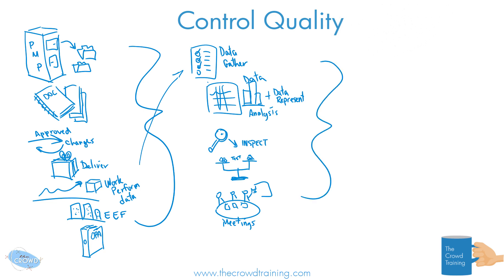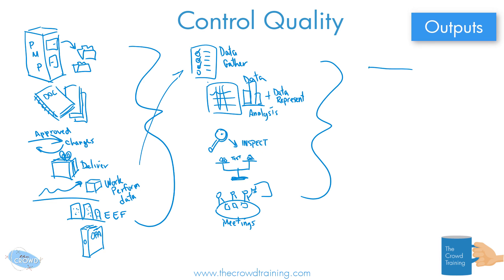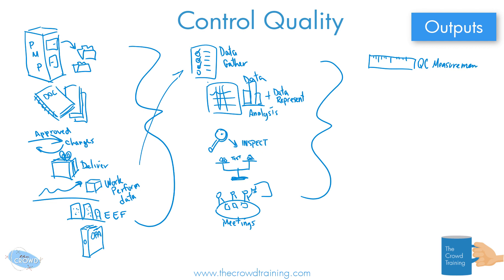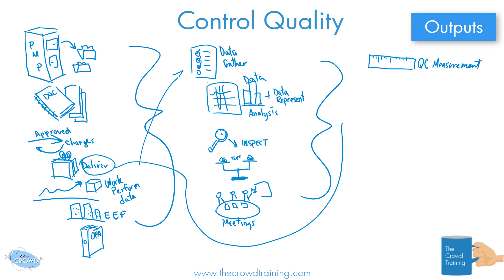So what do we get out of controlling our quality? Those are the outputs. One, we should have these measurements — as we're collecting them, we should have something to show. So I'll draw a quick ruler here to represent the quality control measurements that we have gathered, collected, and done. Also, the work that we have delivered — not only did we deliver it, but it is A+. We have verified it, and this deliverable does in fact meet all that we said it would meet. So it's a verified deliverable.